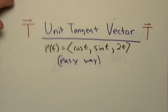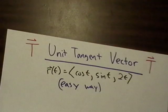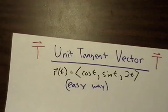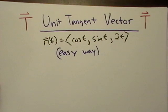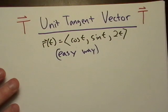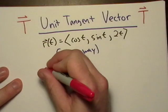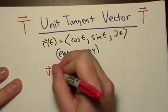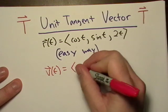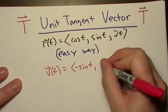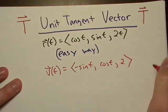Here's the easy way. You probably already know how to do this. Here is the unit tangent vector. Here it is again, the easy way. What do I want first? Well, I want the forward velocity, don't I? Forward velocity. That's just going to be negative sine t, cosine t, and 2.